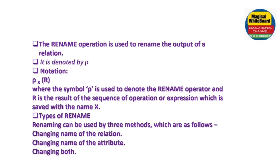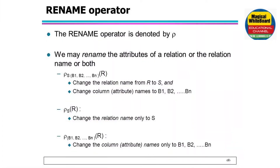Rho is the Rename Operator. X is the new name and R is the previous name — that is, the old name of the relation. We denote Rename as Rho. We write Rho, S, with attributes B1, B2, ... BN applied to relation R. We will change the name to S.